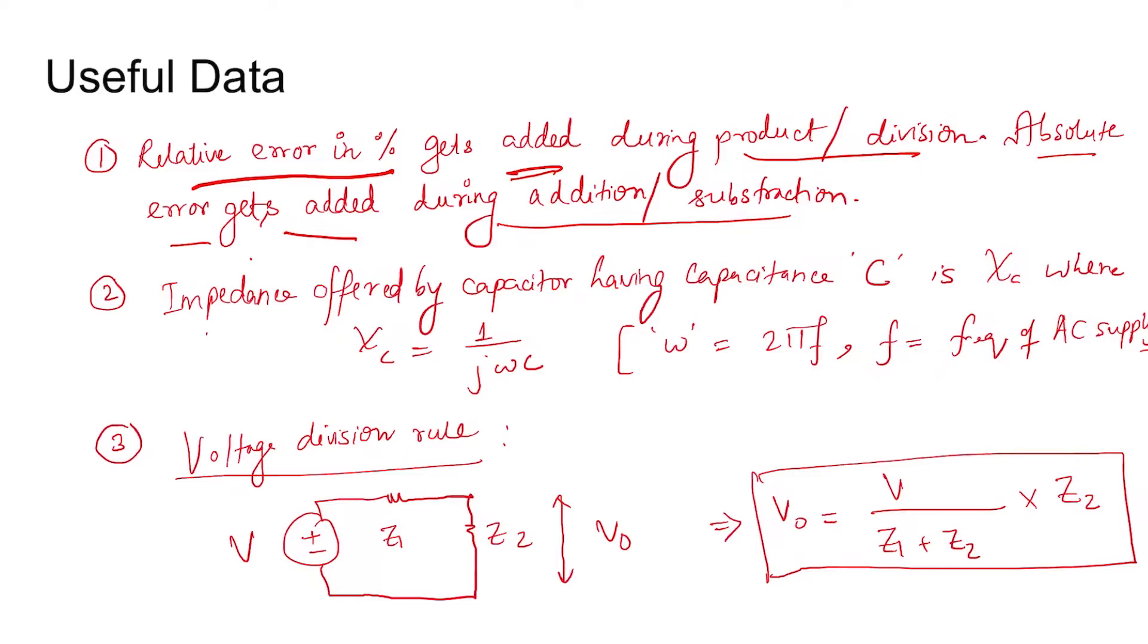Impedance offered by capacitor having capacitance C is reactance X_C, where X_C equal to 1 by jωC, where ω is 2πf and f is the frequency of the AC supply.